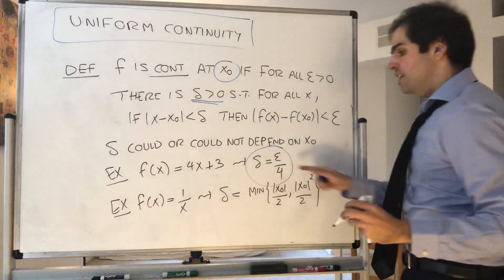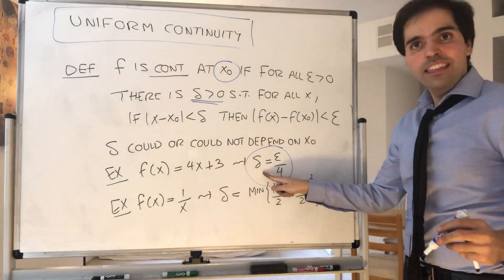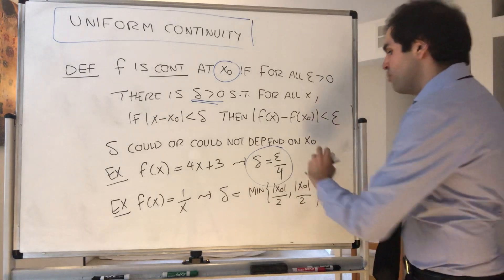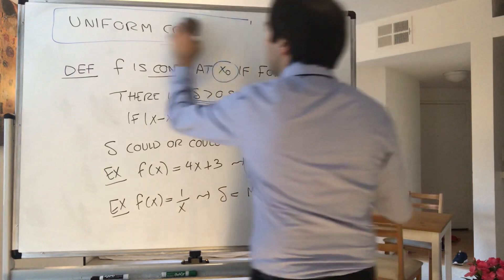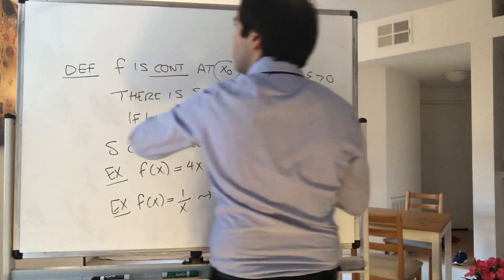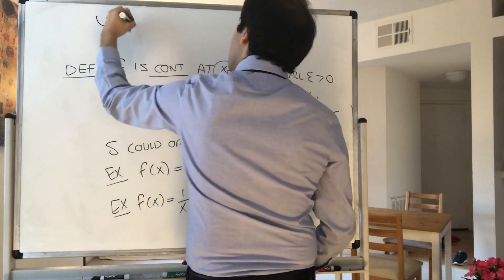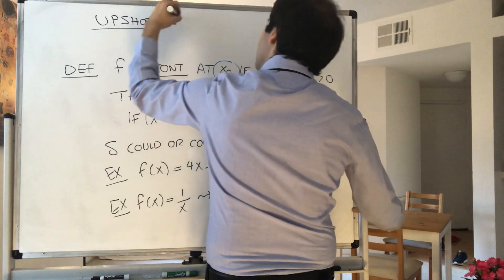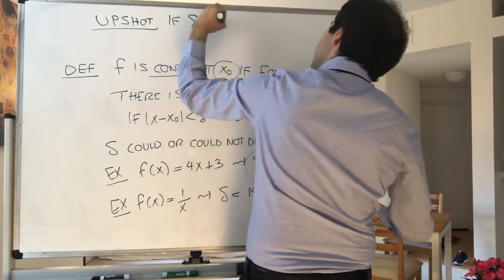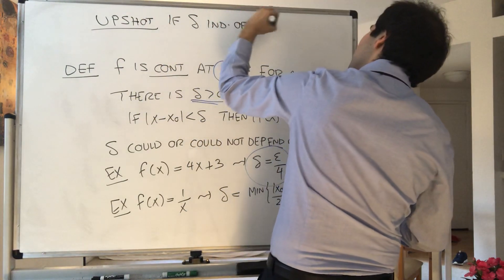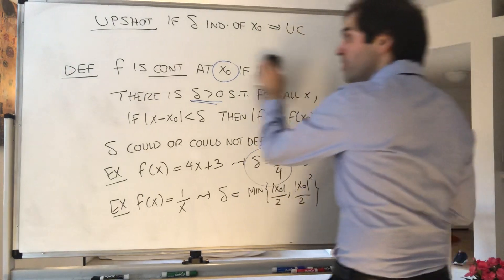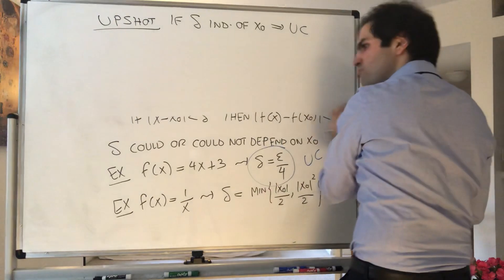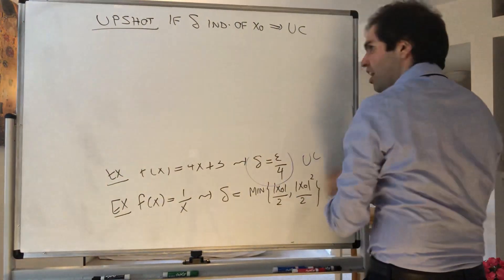And the point is, if delta is independent of x0, then we call that uniform continuity. So if you want upshot: if delta independent of x0, we call that uniform continuity. So let me give you the definition. It looks really similar, but it's not quite the same.